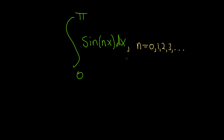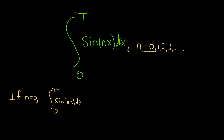When you integrate the sine of nx, you end up getting the negative cosine of nx divided by n. Because we have to divide by n, let's look at the case when n equals 0 first. If n equals 0, we have the definite integral from 0 to pi of the sine of 0 times x dx, which equals the integral of sine of 0.